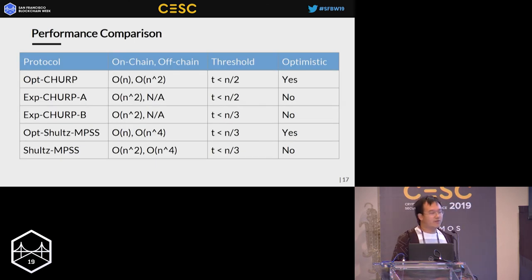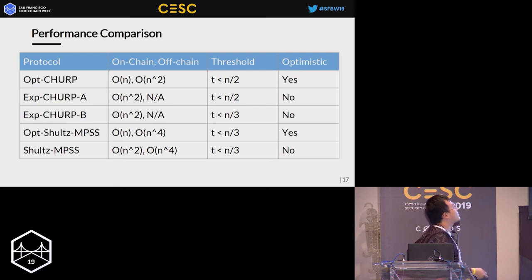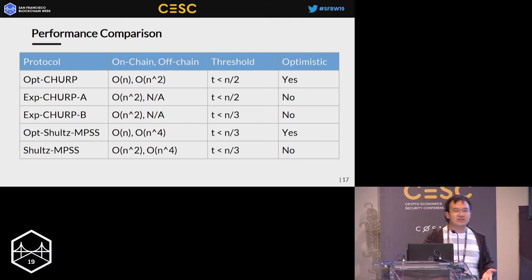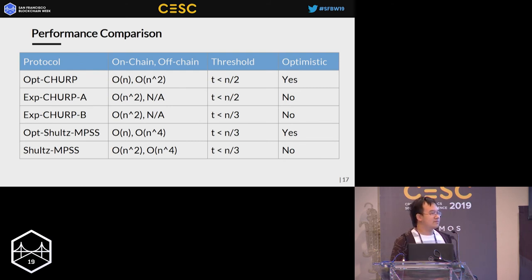Now let's look at the performance comparison. Optimum-short MPSS is the state of the art, but it suffers from a very high off-chain communication cost — O(n⁴) complexity. CHIRP improves this to O(n²) complexity, which is much more practical. We achieve this by two techniques: first, the KZG commitment, which has constant complexity compared to the commitment used in short MPSS which has O(n) complexity. The second n-factor improvement comes from the bivariate polynomial secret sharing scheme, since short MPSS uses another scheme to overcome the handoff challenge that introduces an additional O(n) complexity.